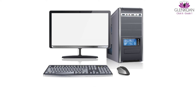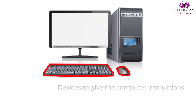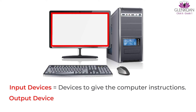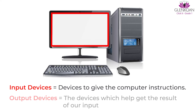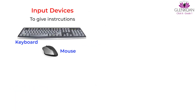So how do we give instructions to the computer? We enter the data using input devices like the keyboard and mouse. The devices which help us give the computer instructions are known as input devices. We can see the output displayed on an output device like the monitor. The devices which help us get the result of our input are known as output devices.